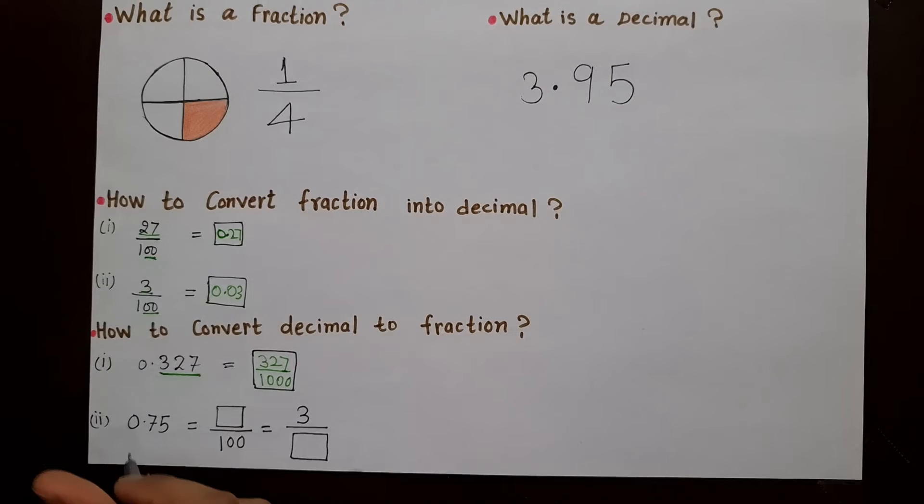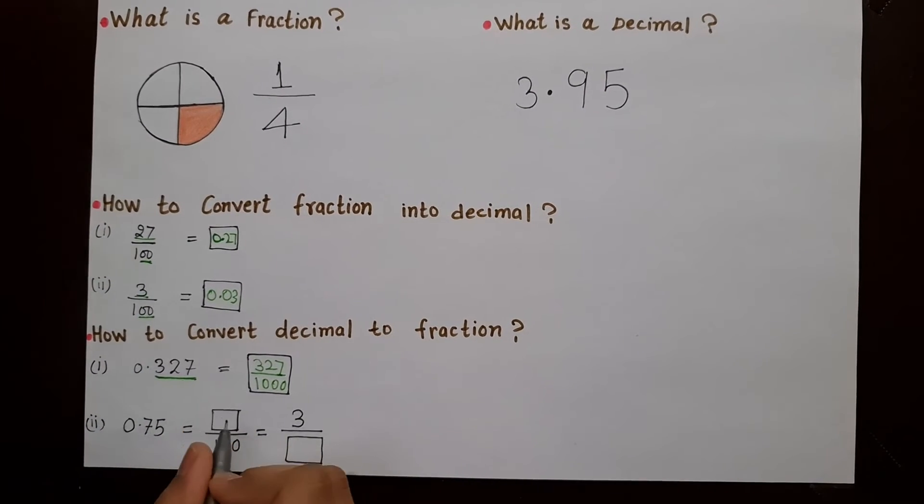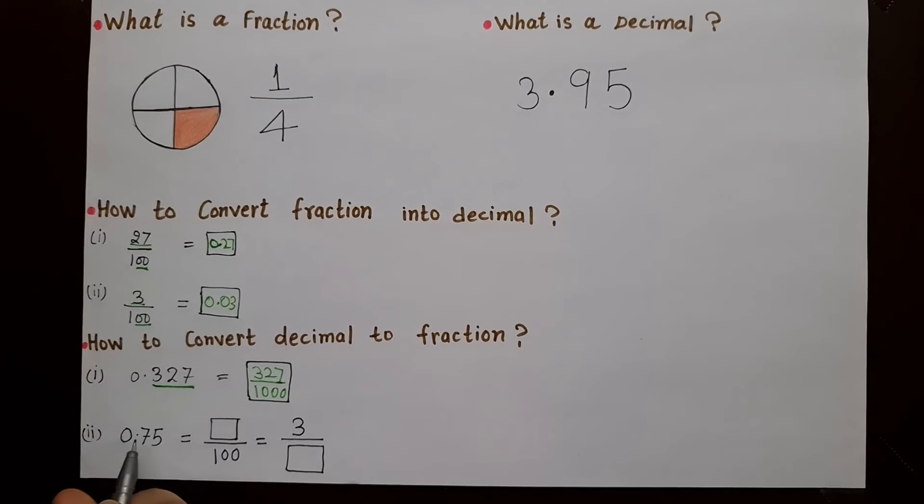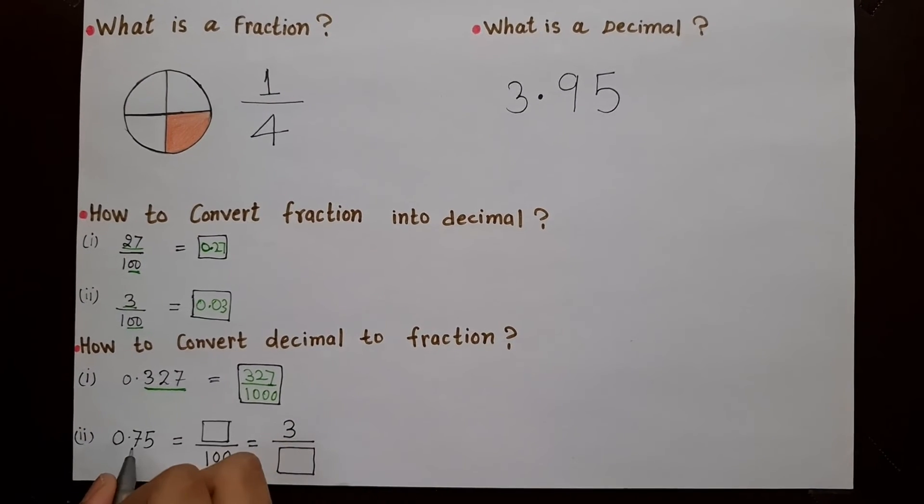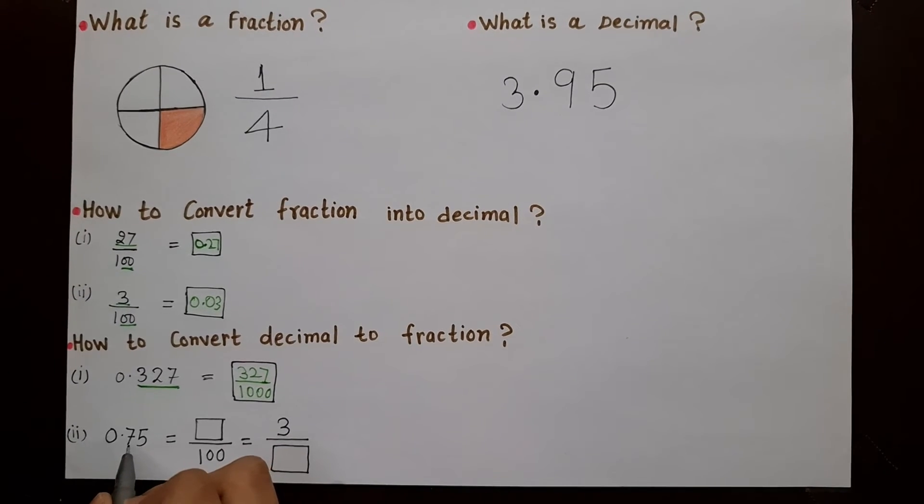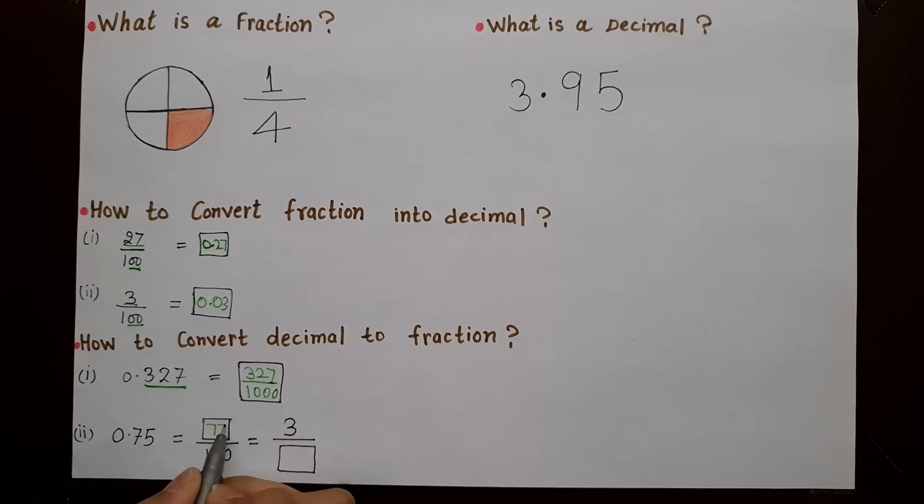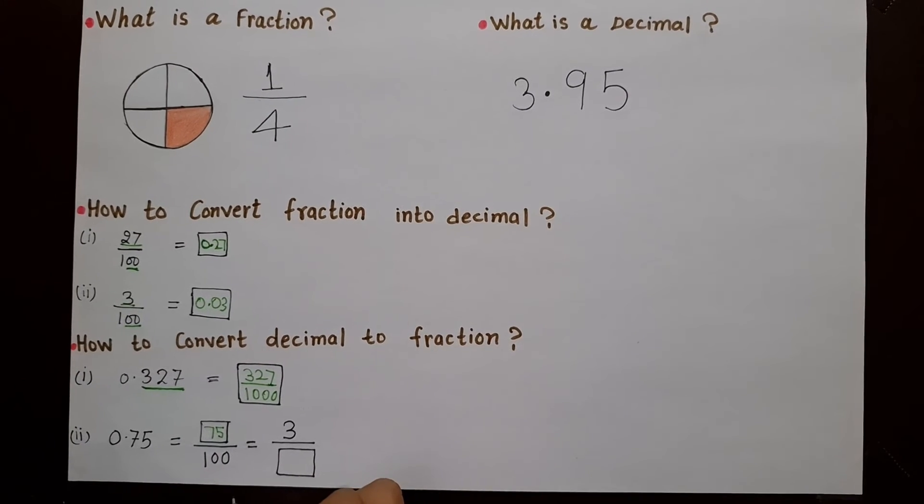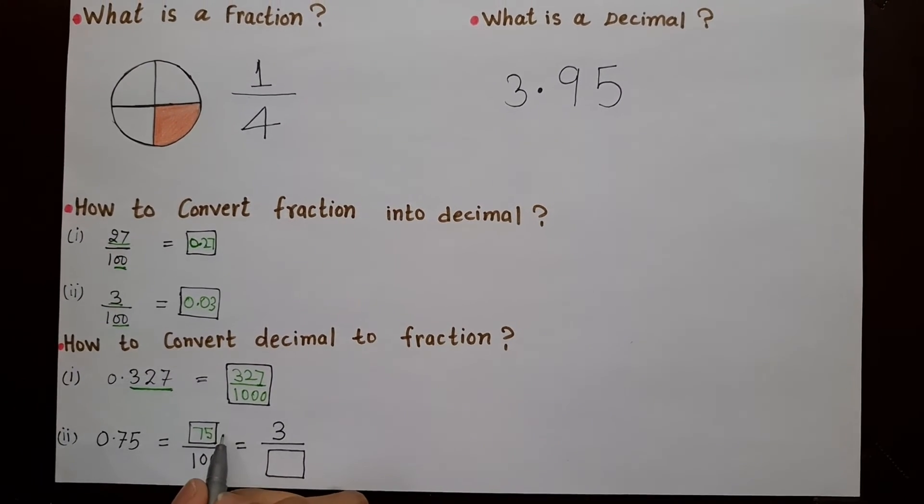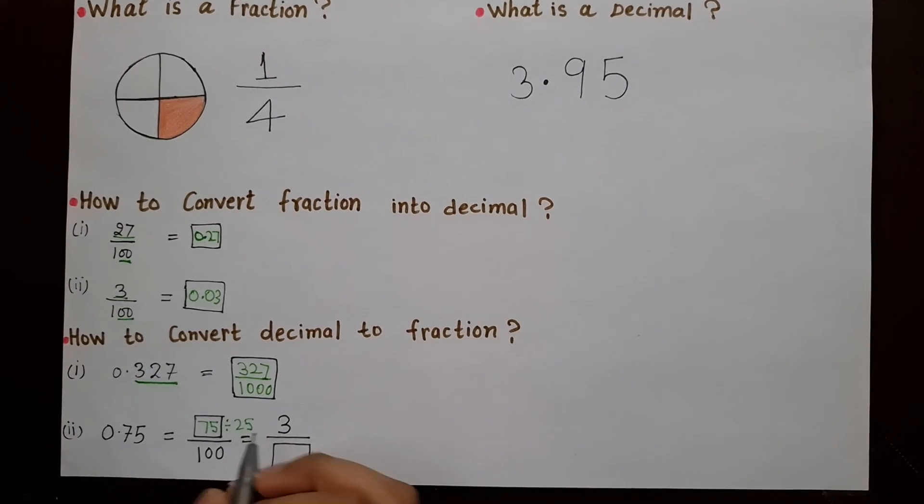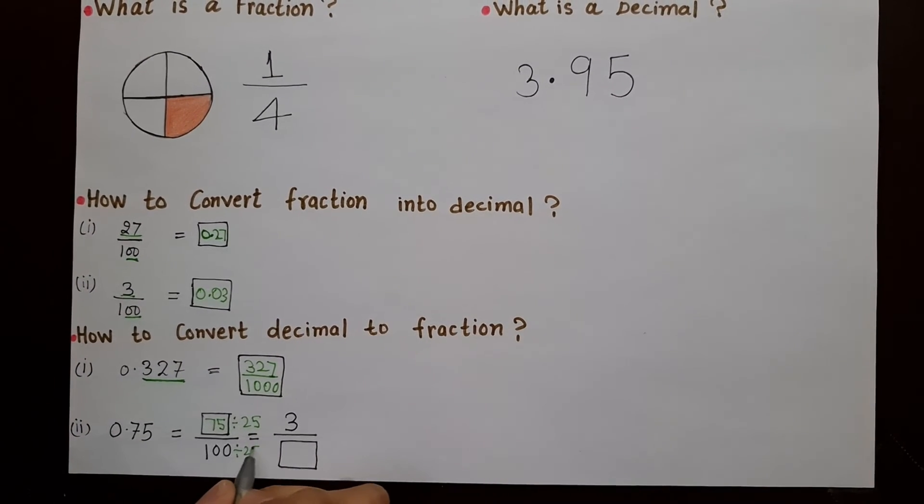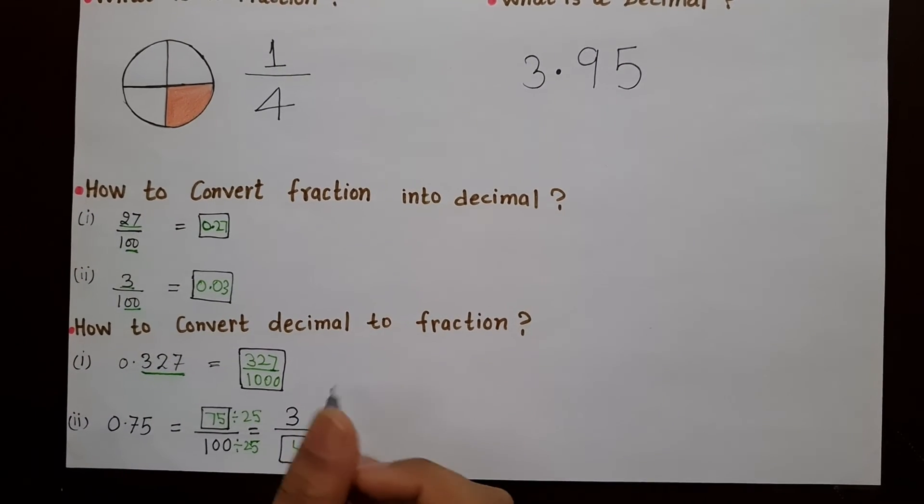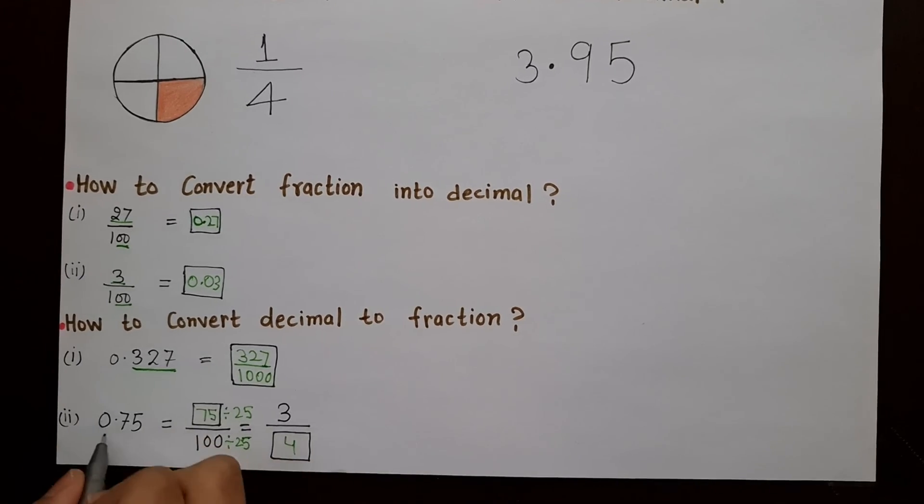Sometimes we come across decimals which can also be simplified. It's very easy. You just have to write the number as a fraction, 75. And just divide it by whatever number you think it will be divisible by. So here we have divided this by 25, which would give us 3. Again, we divide this by 25, which would give us 4. So 3 by 4 is a simplified fraction for 0.75.